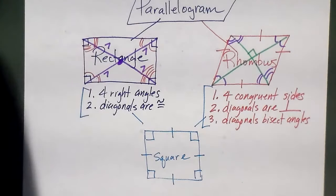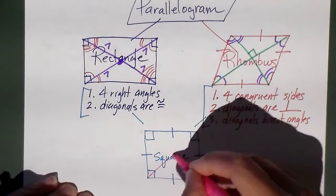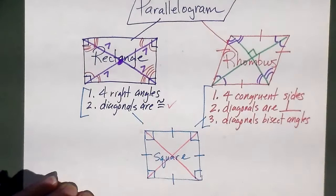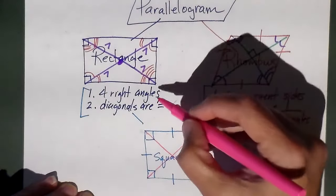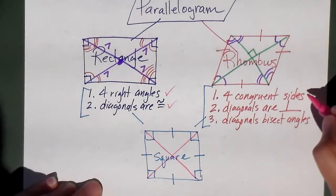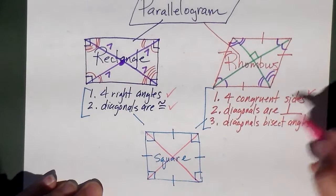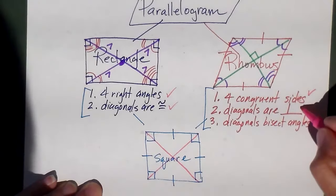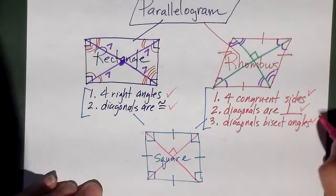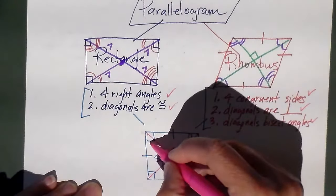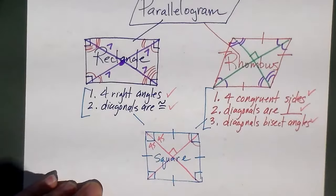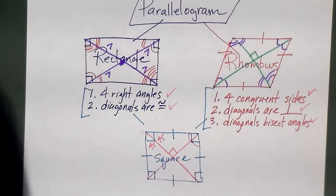In a square, the diagonals are going to be congruent, just like the rectangle. It's got four right angles, just like the rectangle. It's got four congruent sides, just like the rhombus. It's got perpendicular diagonals, just like the rhombus. And the diagonals cut the angles into 45 degrees — cut them in half, just like the rhombus. So those are the special characteristics.